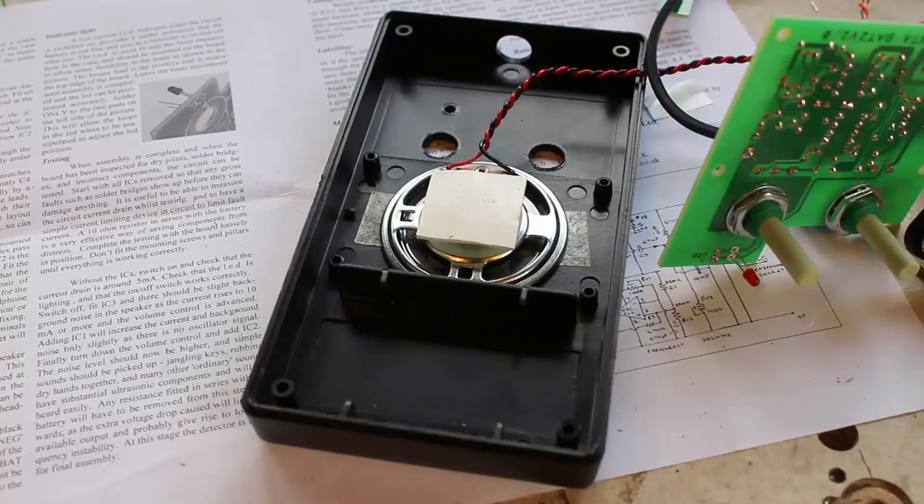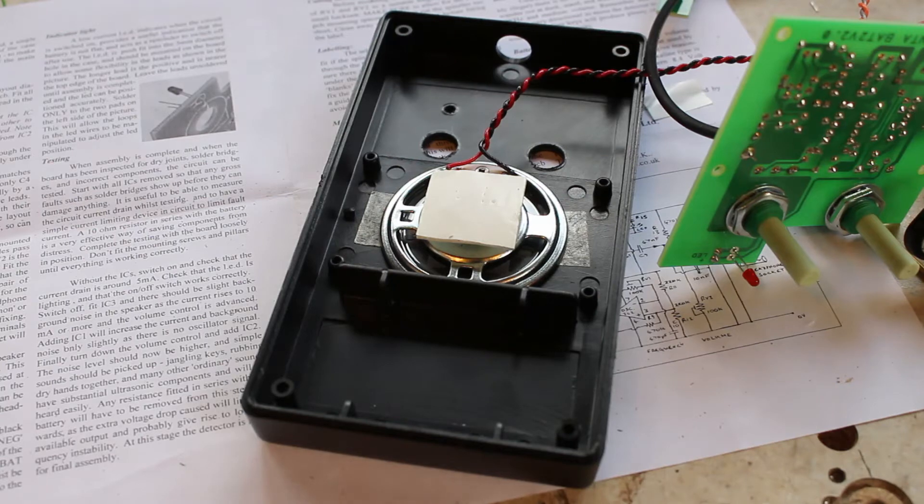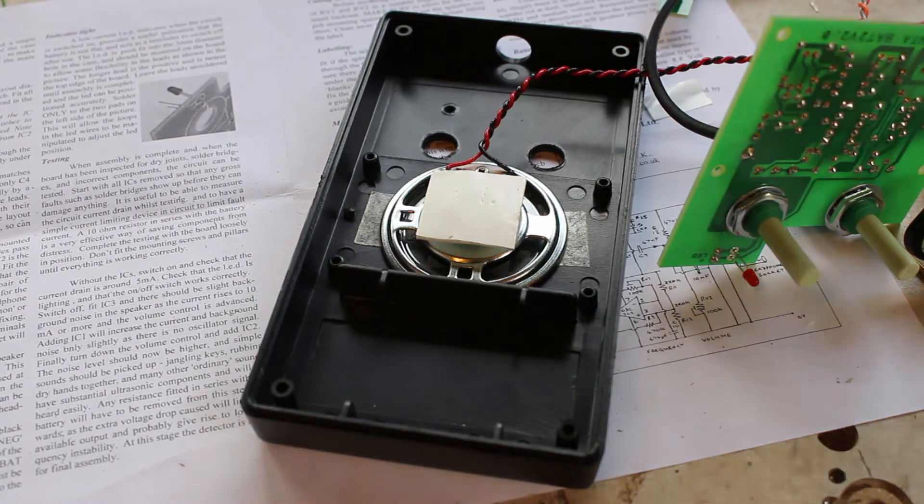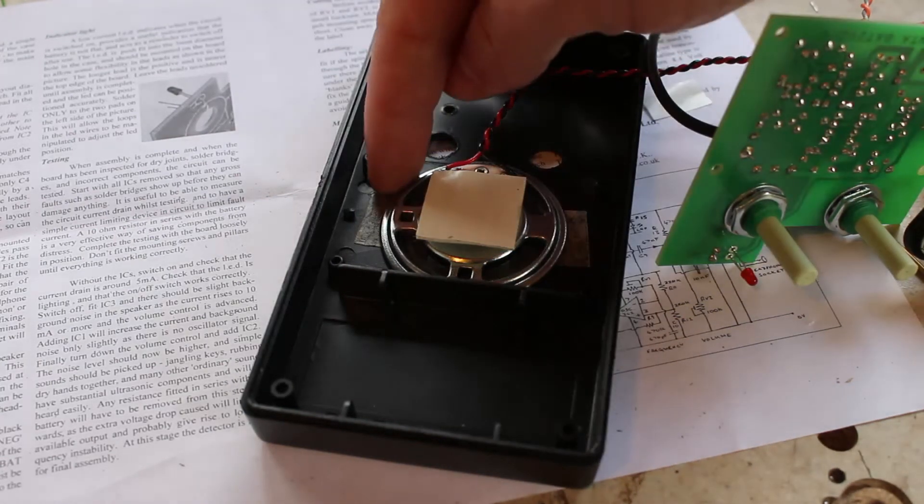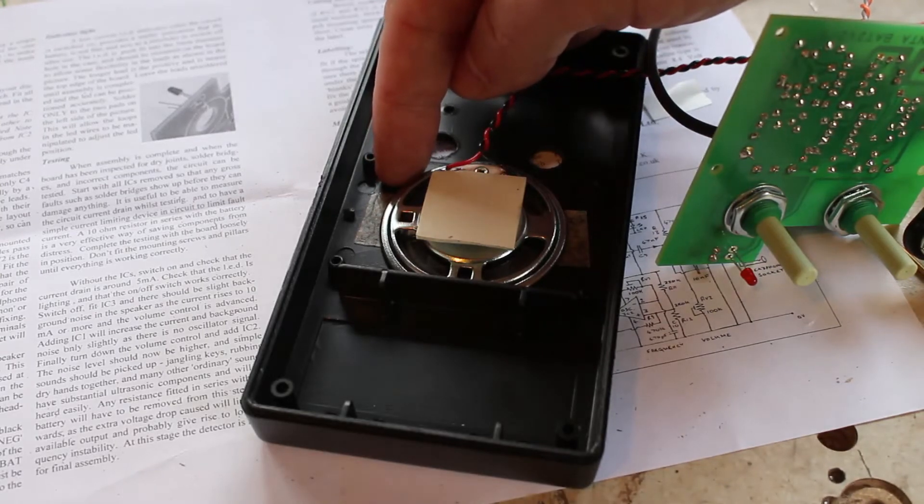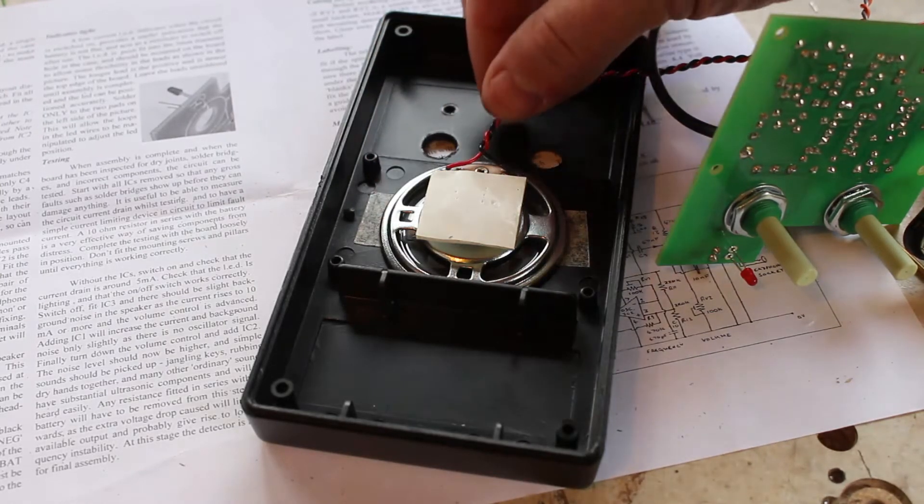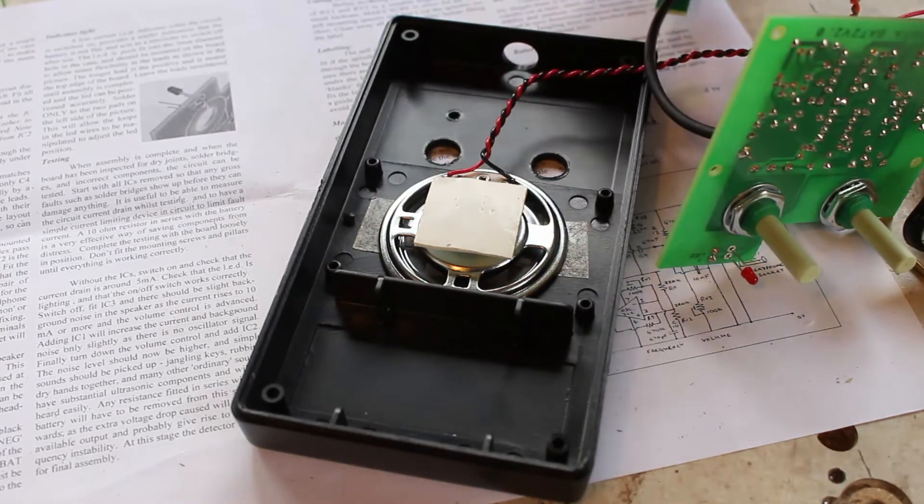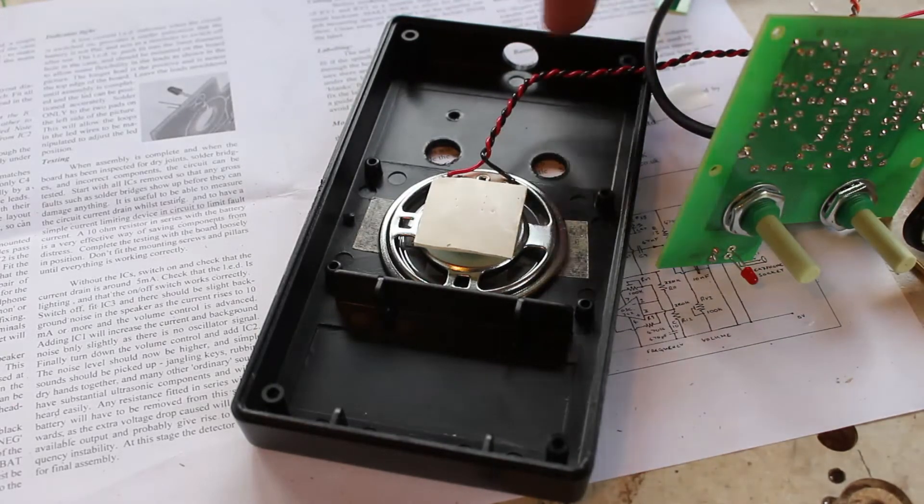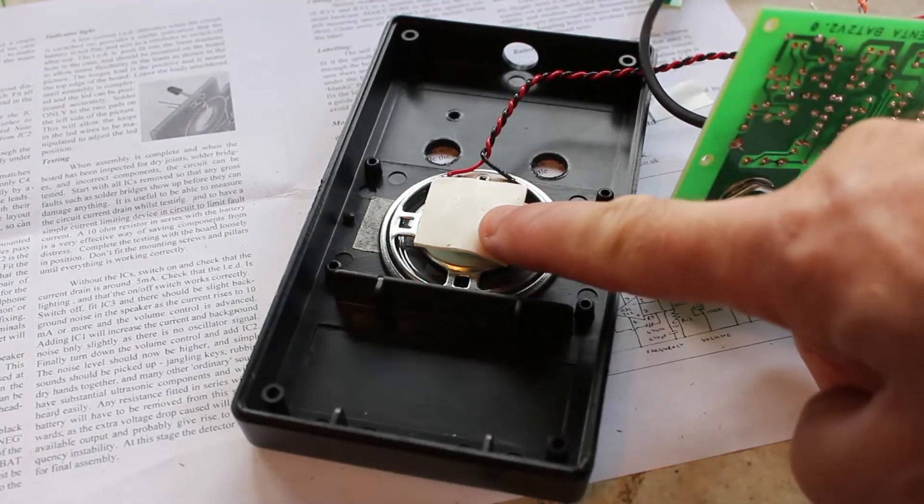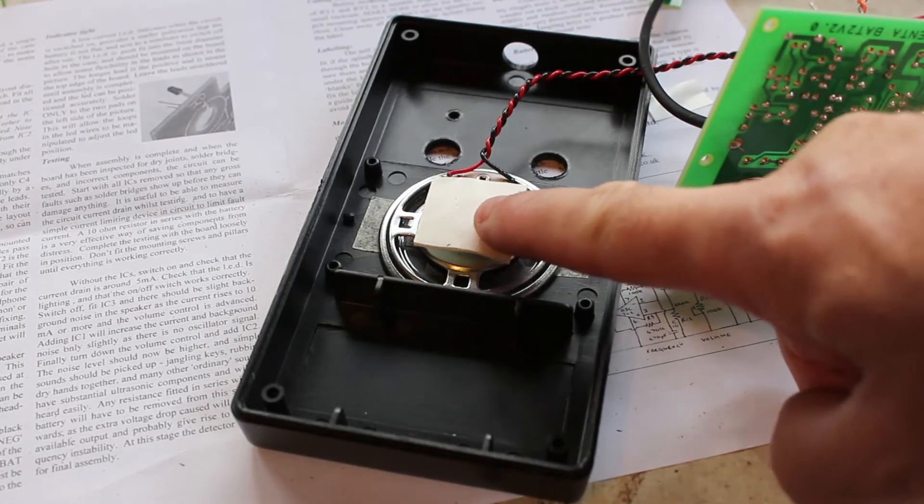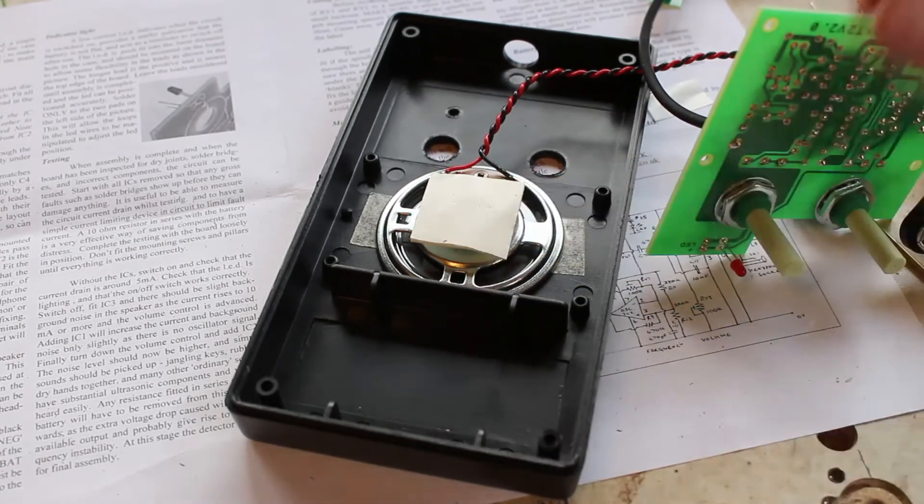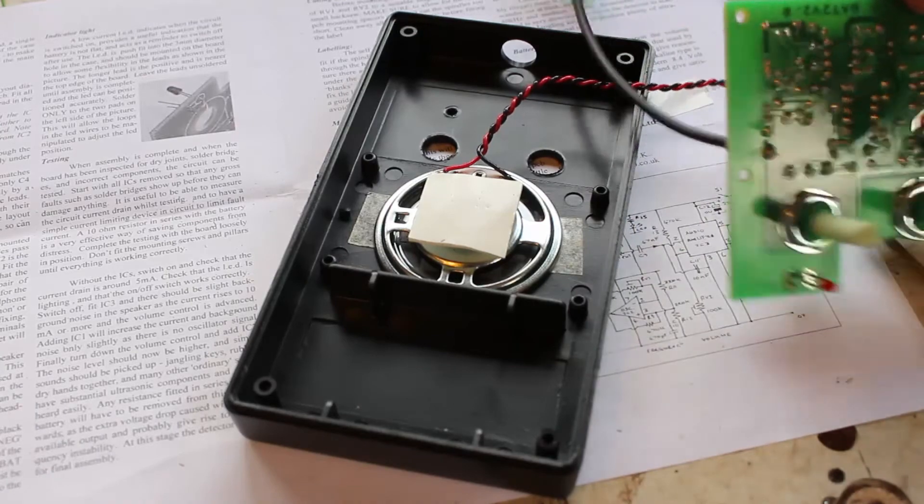We're now putting the kit together in the case. The first thing I've done is I've mounted the speaker and I've used two little bits of double-sided tape here. Not the foam stuff, just normal double-sided tape. I've put it centrally and so the cable goes upwards. I've temporarily put a piece of foam tape here because you don't want the back of the speaker touching the back of the PCB because that will cause a short.